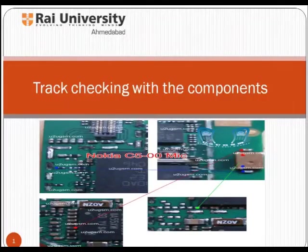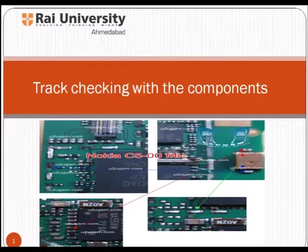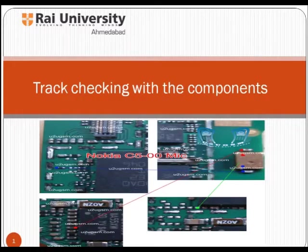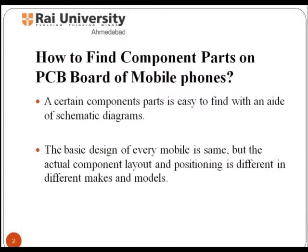Track checking with the components: while repairing a mobile phone, you should have a full understanding of various components, track checking connecting these components, and different parts of a mobile phone. Our objective is to make you learn repairing by giving concerned knowledge of the internal structure of a mobile phone and make you expert in this field. A mobile phone is not a single-part instrument but comprises many small parts that intercommunicate to perform operations. Let us start with the identification process related to various components in a mobile phone.